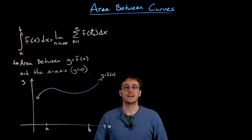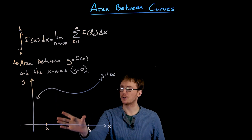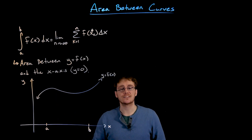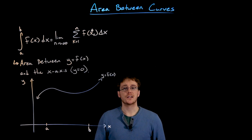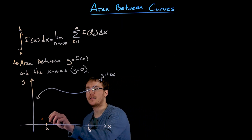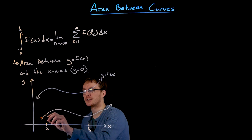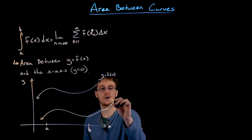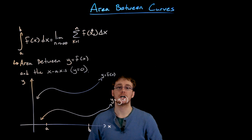So now instead of finding the area beneath just this single curve, or between this curve and the x-axis, we're going to add a second curve in the mix and try to find the area between those two curves. Maybe our first curve on top is given by y equals f of x, and then we have some other function for that second curve — we'll just call it in general y equals g of x.